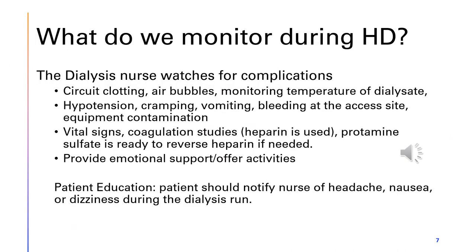What do we monitor during hemodialysis? If your patient is too unstable, the dialysis nurse will come to your bedside. They will either take the patient to the dialysis unit or bring a smaller machine to the patient. The dialysis nurse is watching the circuit to make sure it's not clotting, watching for air bubbles, and monitoring the temperature of the dialysate so they don't make the patient too hot or too cold. But you, as the patient's nurse, still have to care for them — monitoring for hypotension, watching for cramping, vomiting, and bleeding at the access site.